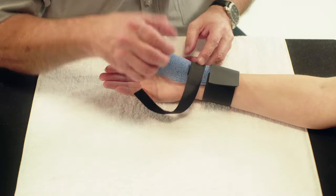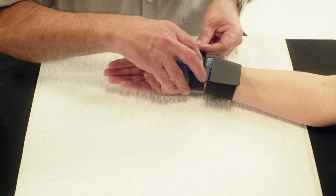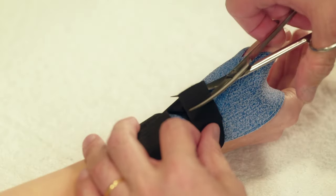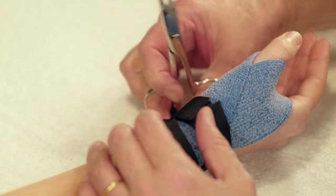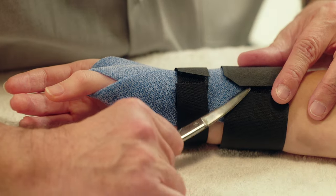If necessary, a second strap of Velcro loop can be attached around the wrist. Cut away any excess Velcro loop and round the corners.